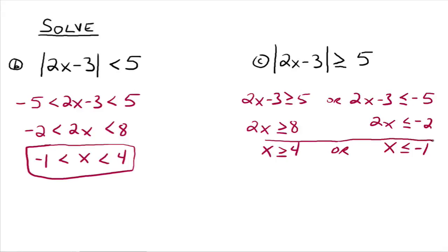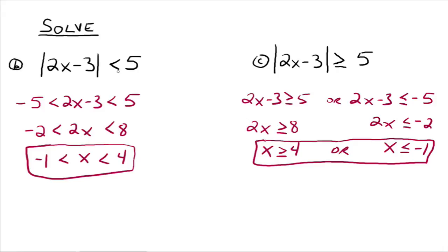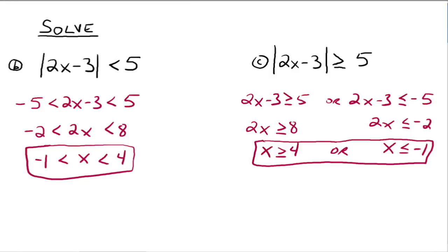So if you take any number greater than or equal to 4, or any number less than or equal to negative 1, and plug them in for x in your original inequality, it will make it a true statement. For all of these — including the equation — you want to make sure you isolate the absolute value first and get it equal to, less than, or greater than some number. Then think about what the equation or inequality means, and that will help you figure out how to write it — whether it's the expression between two numbers, or separated as two separate inequalities. Make sure you see Absolute Value Equations and Inequalities Part 2 to finish up a couple more concepts. Study well.